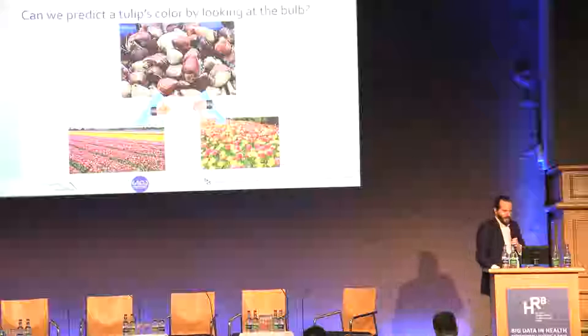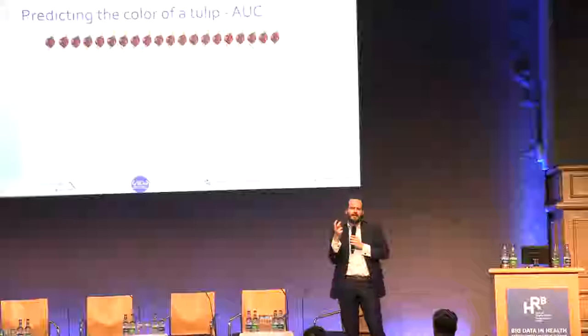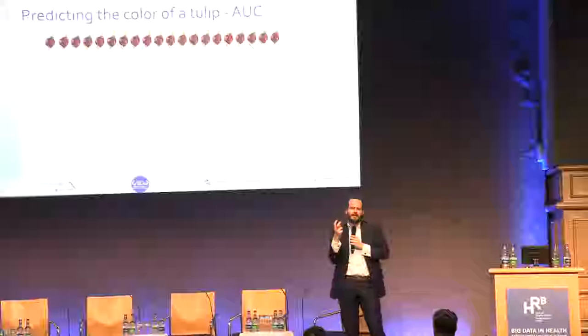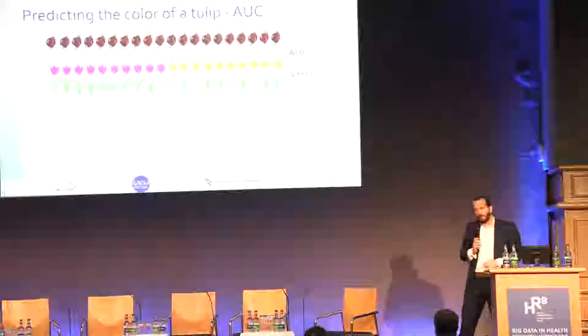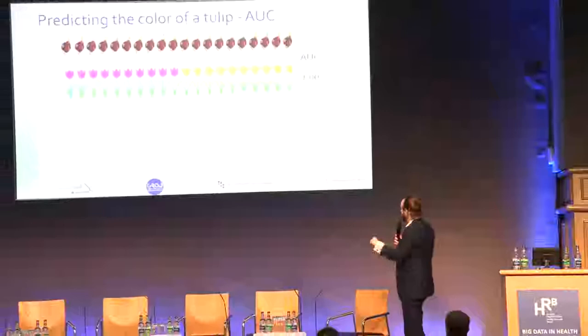You ask a tulip expert to come and help sort this out. You ask the expert: pick a bulb — if you're sure it's going to be pink, put it on the left-hand side; if you're sure it's yellow, put it on the right; if you're unsure, put it in the middle. It's called an ordering experiment. You can put a number on that — it's called area under the curve. A perfect expert has an AUC of one.